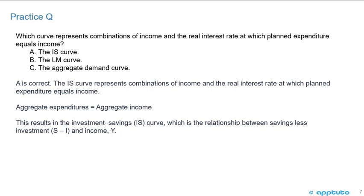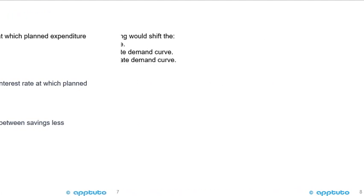Aggregate expenditures equals aggregate income. This results in the investment savings curve, which is the relationship between savings less investment, S minus I, and income.